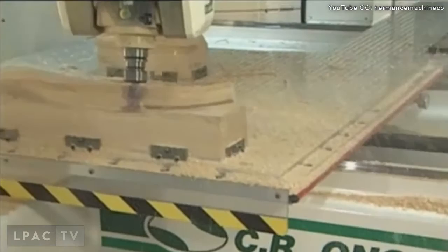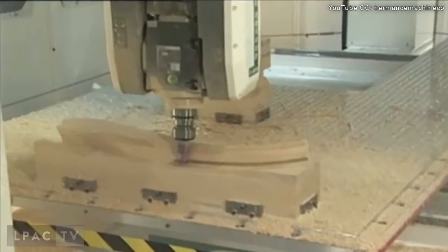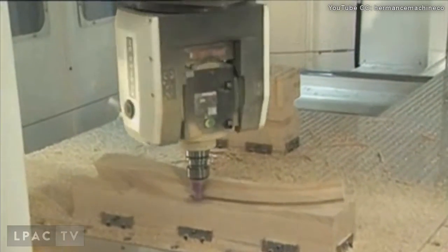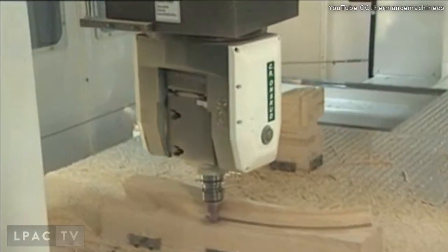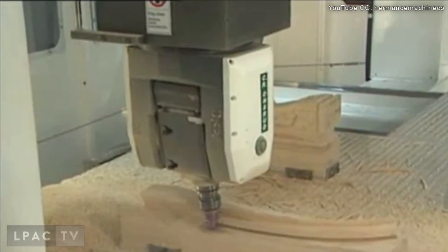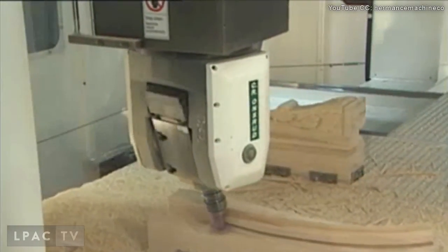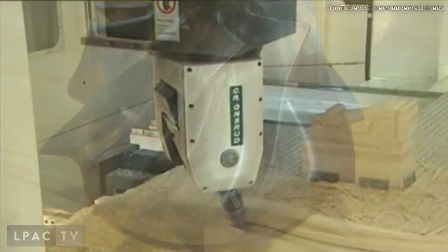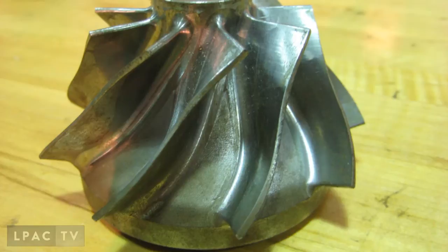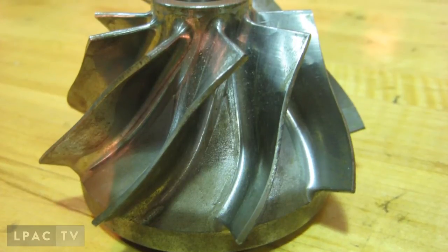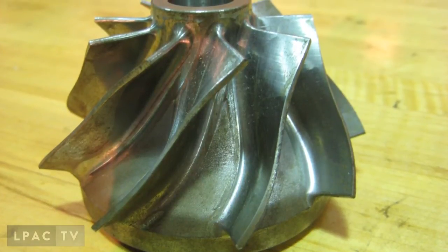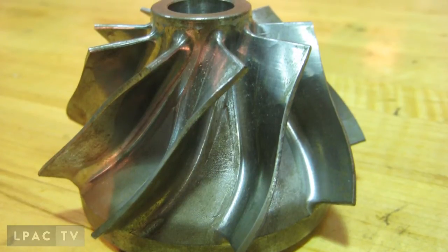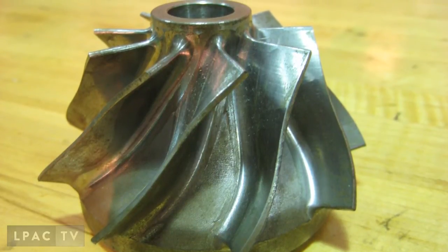With a 5-axis mill, two additional motions are added. In this case, the cutting head tilts and rotates. Such a machine is capable of making more complex forms, such as that you see here. A piece like this, if made from a particularly hard alloy, could literally take days or weeks to machine without computer numerical control and a 5-axis mill.